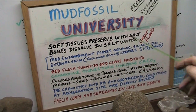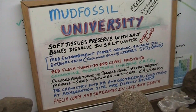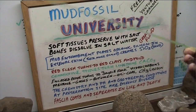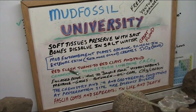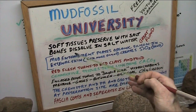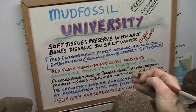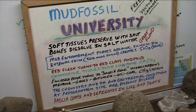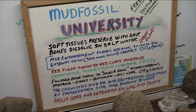Soft tissues are preserved with salt. They used to preserve meat and so forth using salt — it saves them. When they're in the salt water, the bloating gases that explode tissues bleed off into solution in the water. Now, bones are a whole different story. Bones dissolve in salt water. They never find any bones in salt water shipwrecks — they're gone after a few years, totally gone. They get invaded and they get destroyed.